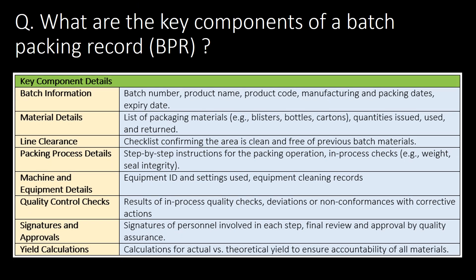What are the key components of a batch packing record (BPR)? Batch information, material codes, line clearance, packing process details, machine and equipment details, quality control checks, signatures and approvals, and yield calculations are the key components of a batch packing record or BPR.